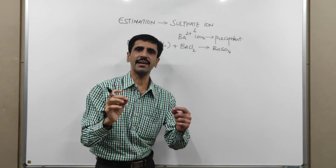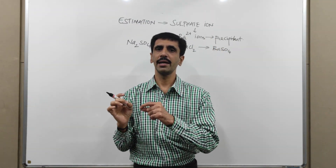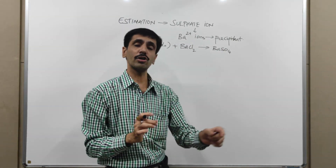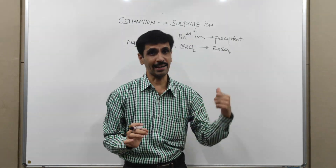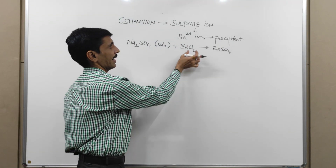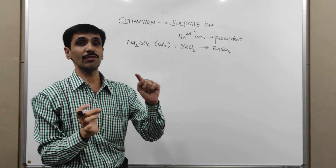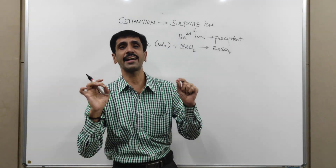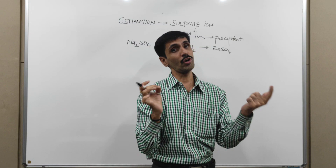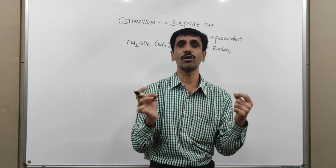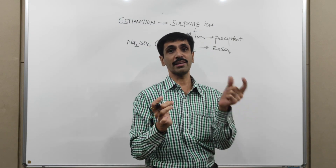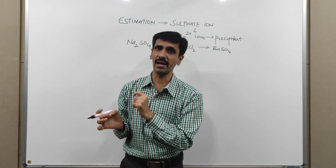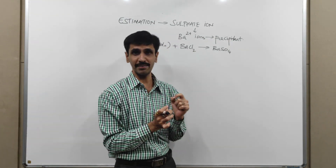A precipitate is the formation of a solid in the presence of a liquid. BaSO4 is not going to be the only product — the chloride ions will combine with the sodium ions and give you sodium chloride. Because the reaction is carried out in an aqueous medium, sodium chloride is going to be soluble, so it remains in solution. Barium sulfate is in the form of a solid, and that is what we call a precipitate.